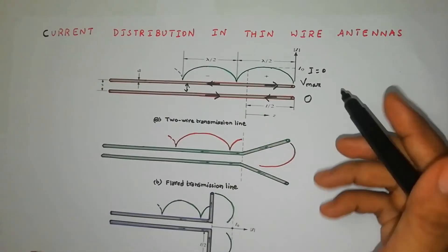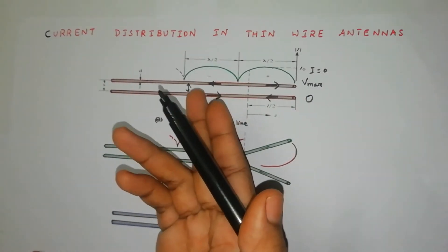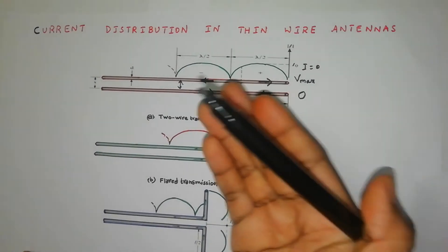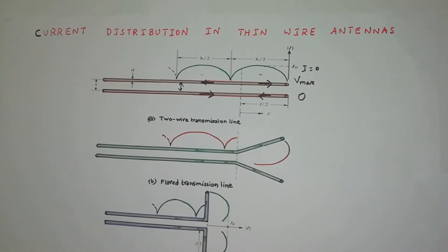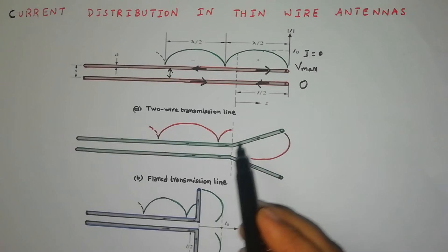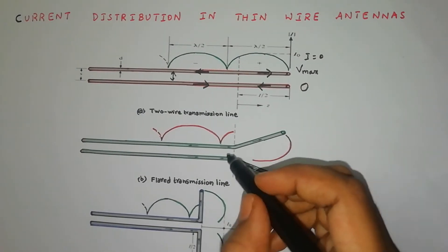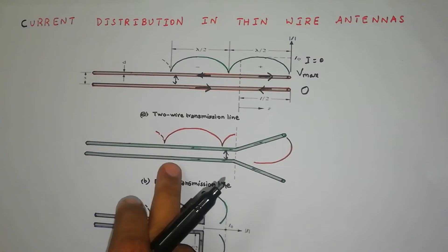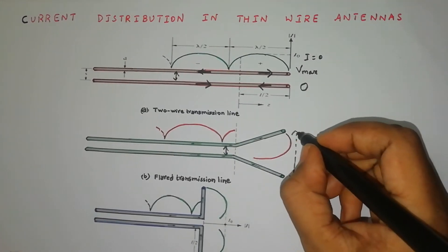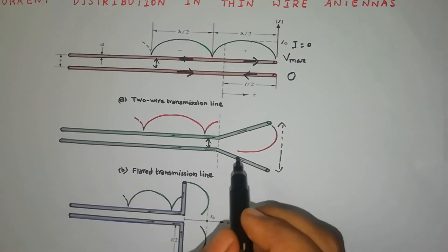If we have this type of arrangement the output radiation will not be present — it is similar to a transmission line concept, not an antenna. Now if we modify this diagram a little bit — see the second diagram — we introduce some flaring for the same parallel wires. Because of this flaring, up to a certain point the distance between the two wires is small, but after that point there is much more separation between the two lines.